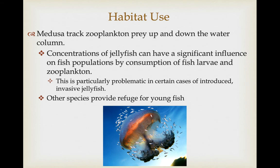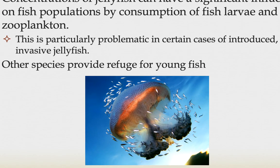Many cnidarians have commensal, mutualistic, and endosymbiotic associations with bacteria and zooxanthellae, similar to sponges. They also have associations with other animals—for example, a cnidarian living on the back of a crab, providing protection for the crab while the crab provides feeding opportunities for the cnidarian. One of the more famous mutualistic associations is between sea anemones and clownfish. Some medusa track zooplankton prey up and down the water column, and large jellyfish populations can significantly impact fish populations by consuming fish larvae or the zooplankton that fish larvae depend on. In other cases, jellyfish provide refuge for young fish, which have evolved resistance to the nematocysts of their jellyfish host.